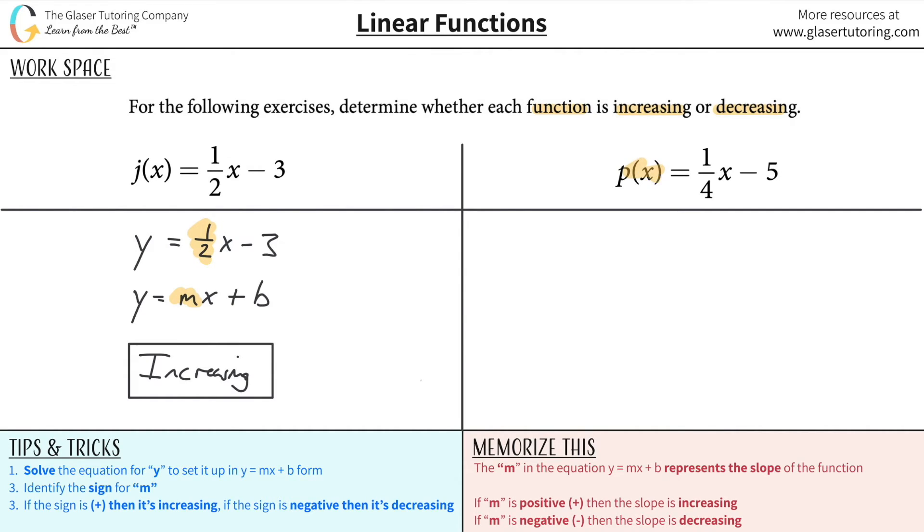If you notice, this is y, this is m, this is x, and this is your b. So what's the slope? One-fourth. Is it positive or negative? It's positive. And what can we call it? We can say that the graph is increasing or the function is increasing.